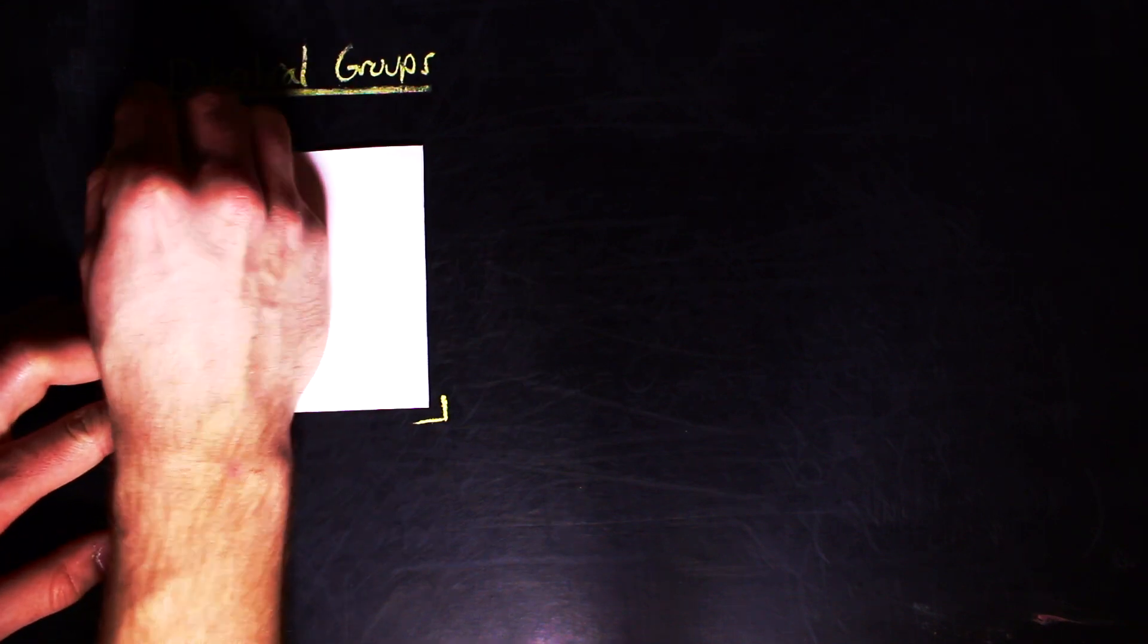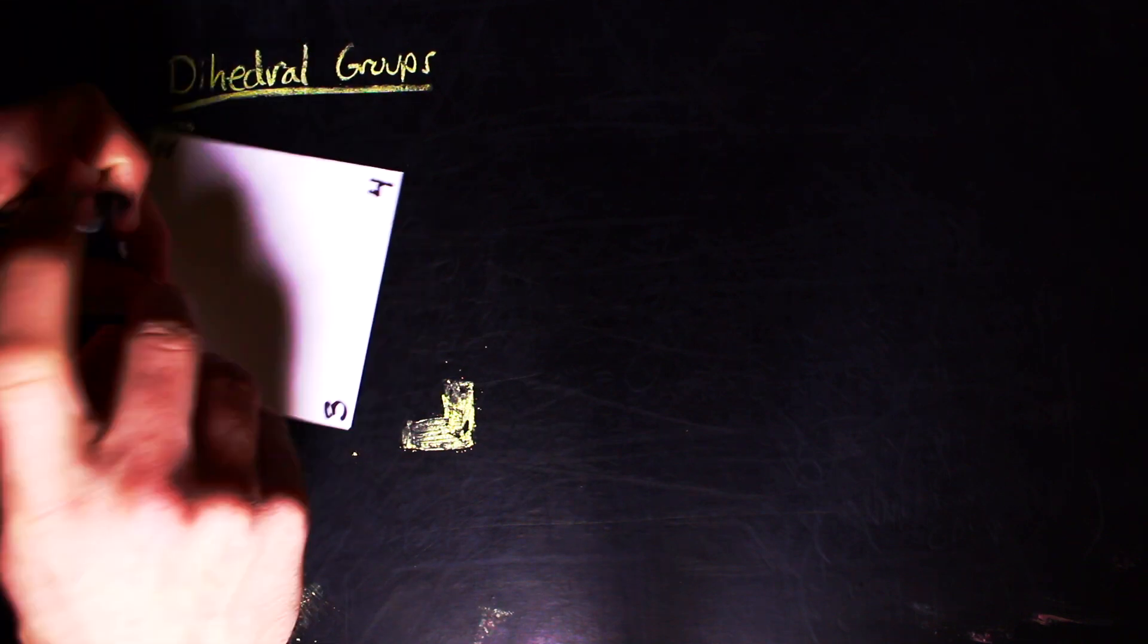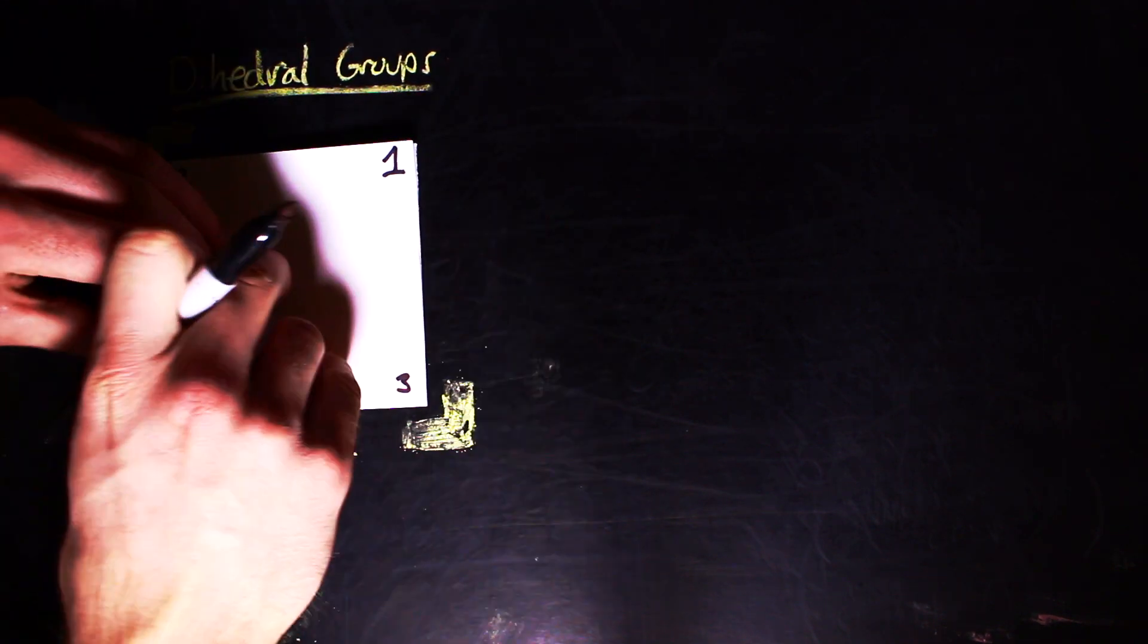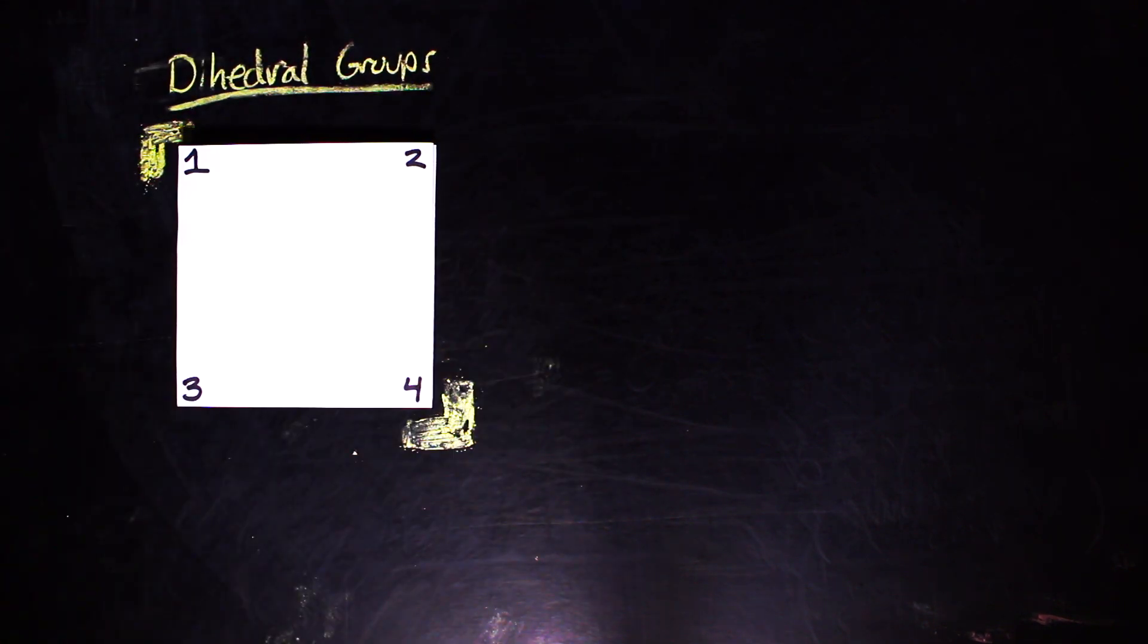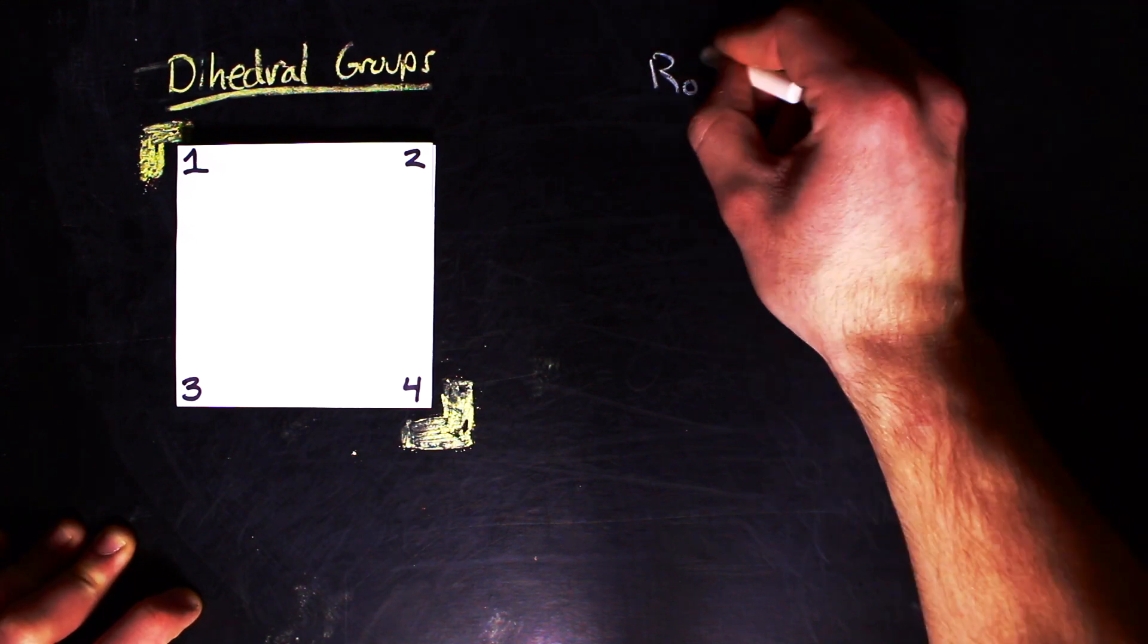Notice that if we rotate it or flip it such that a corner lines up with where our corner used to be, we still have a square. In order to keep track of the corners, we're going to go ahead and label them on both sides with a number. Now we're going to start with the corners in the formation 1, 2, 4, and 3, reading clockwise.